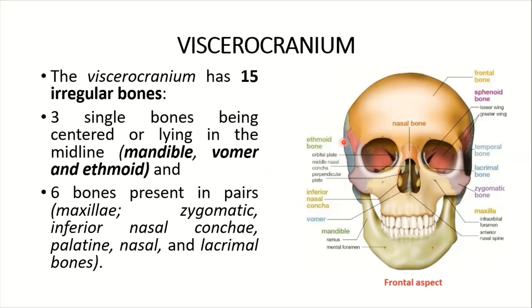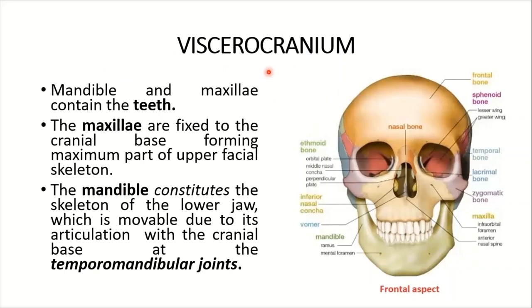Six bones are present in pairs in the viscerocranium: maxillae, zygomatic, inferior nasal conchae, palatine, nasal, and lacrimal bones. The mandible and maxillae contain the teeth in alveolar sockets. These are the maxillary teeth and the mandibular teeth — the upper jaw is the maxilla and the lower jaw is the mandible.